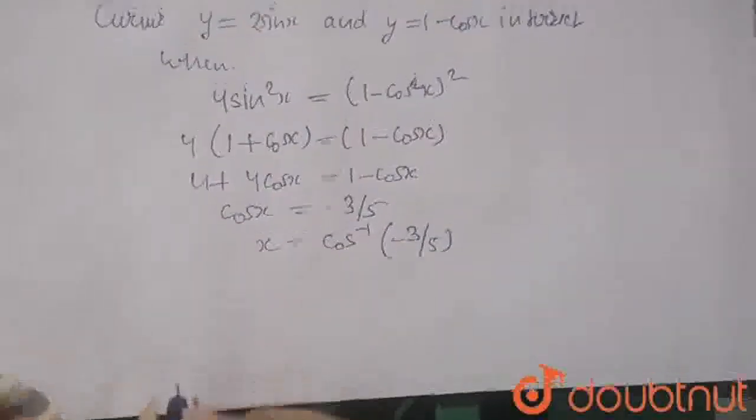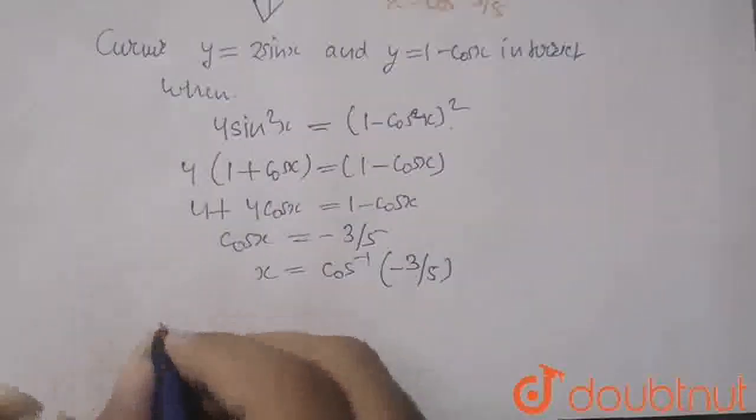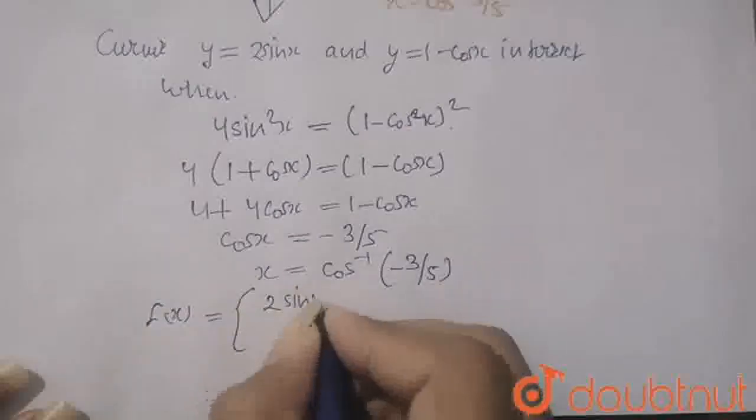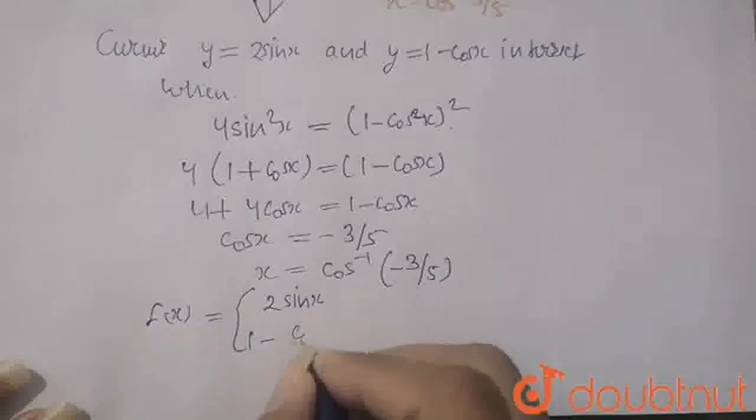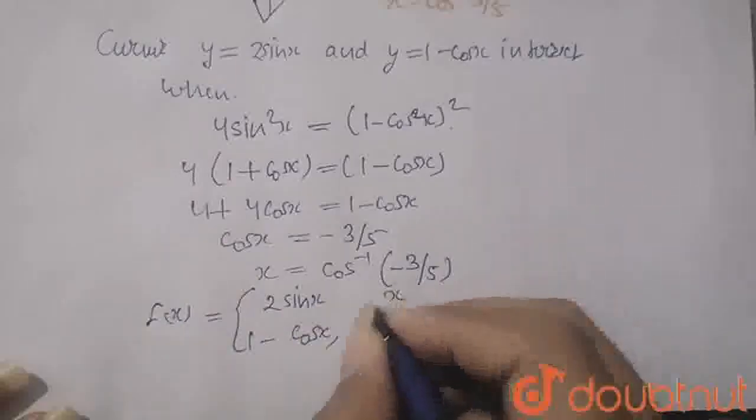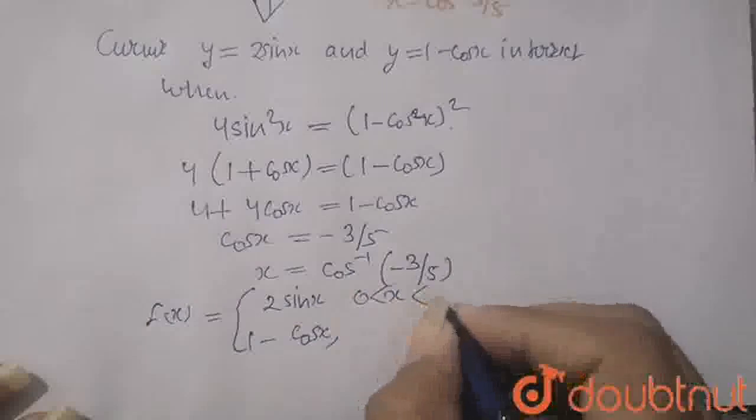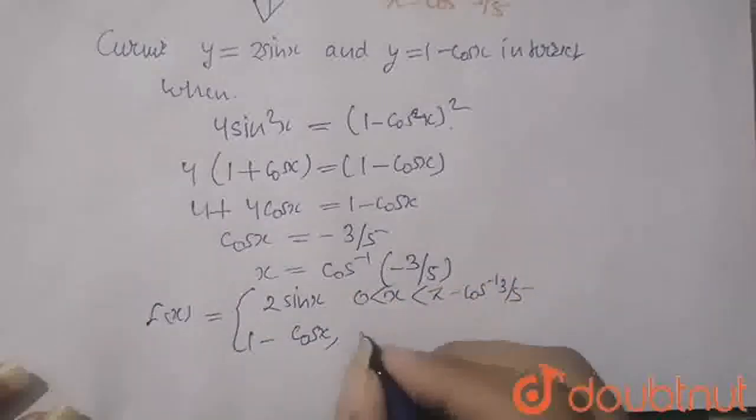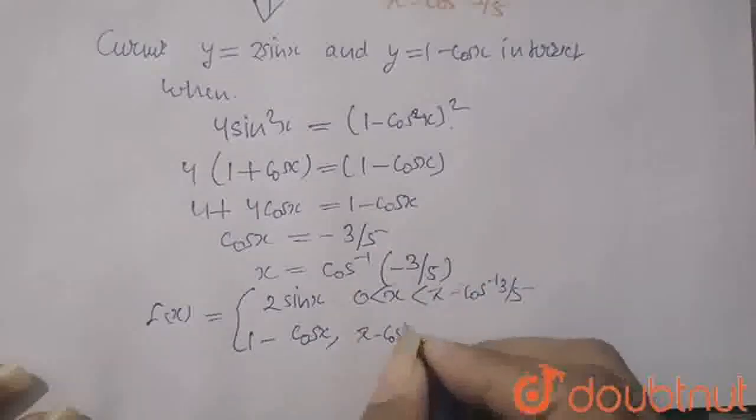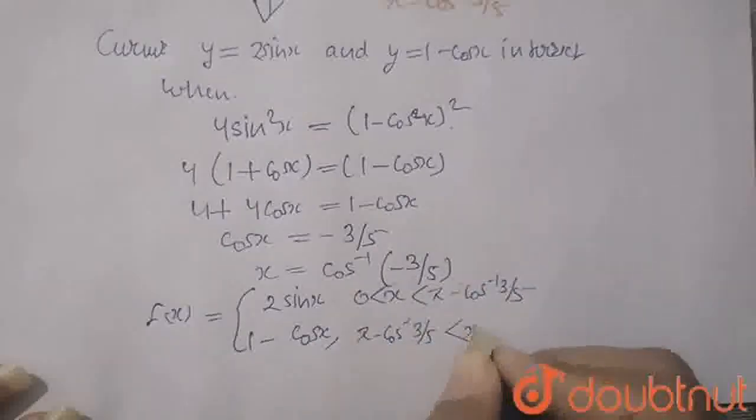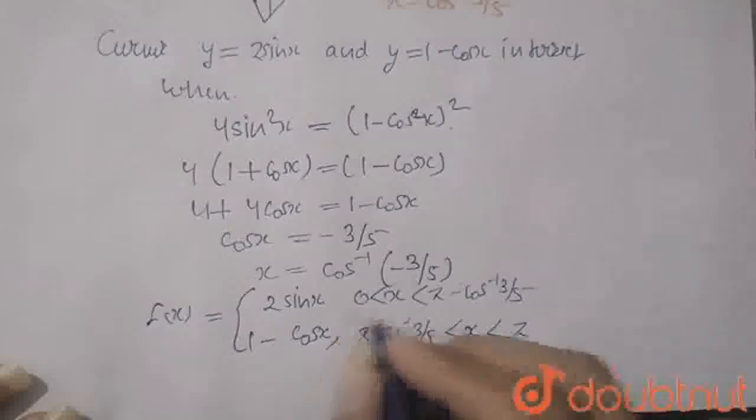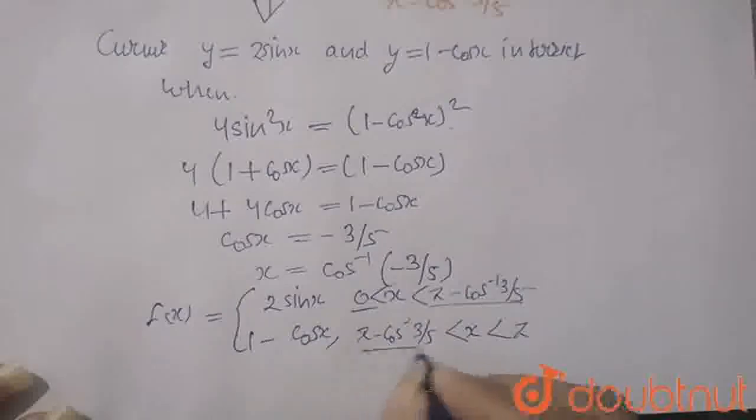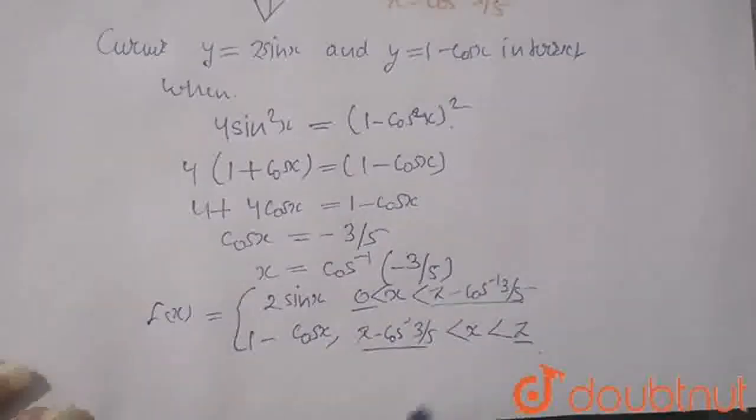Now I am writing here its other things. Here fx equals to 2sinx and here 1 minus cosx. So here x is from where? It is from 0 to cos inverse minus 3 by 5. And here it is from cos inverse 3 by 5 to pi. This is from 2sinx from 0 to this, and this part is from this to this.